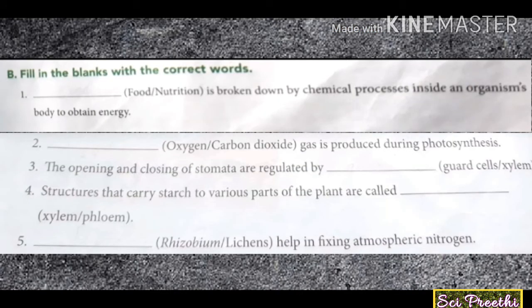Now we discuss fill in the blanks with correct words. First question: — is broken down by chemical processes inside an organism's body to obtain energy. Food is broken down by chemical processes inside an organism's body to obtain energy. The answer is food.